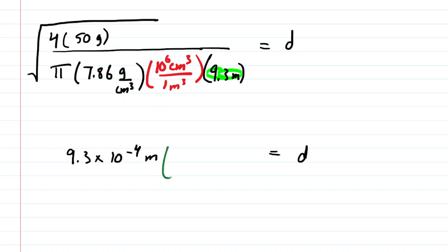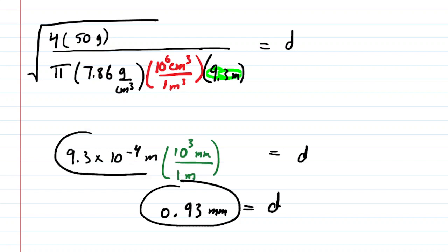If your homework system wants to do millimeters, then you would have to just make one more conversion. We all know, of course, that one meter is equal to 1,000 or 10 to the third millimeters. So if you put that into your calculator, you're going to end up with approximately 0.93 millimeters. And that would be the correct answer for the diameter in millimeters. And then this is the answer in meters.